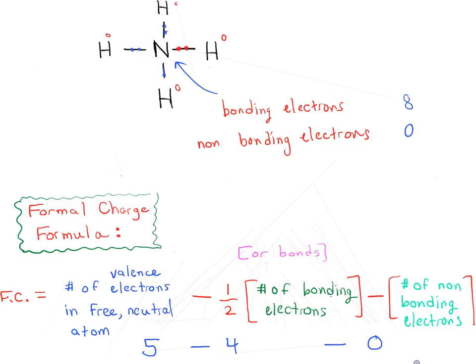So five minus four minus zero gives us a total of plus one. There is a positive formal charge on the nitrogen, so the overall charge of the molecule is plus one.